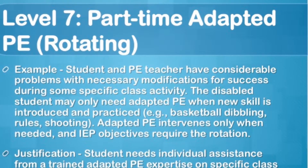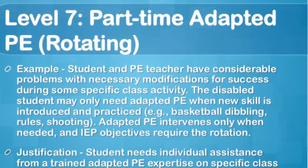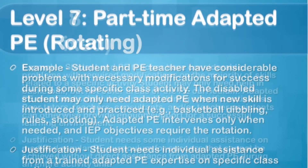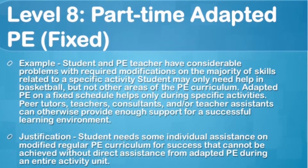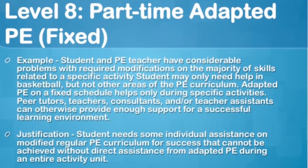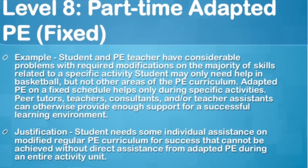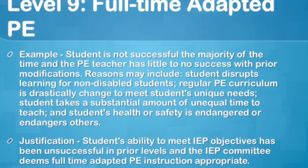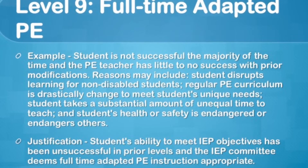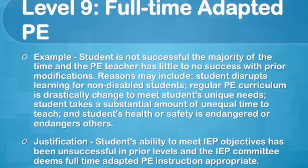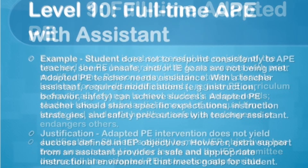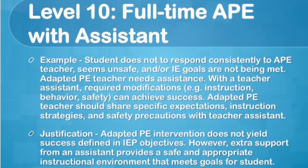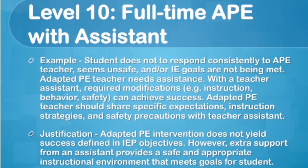Part-time adaptive PE involves a rotating PE or adapted physical educator in the process. Adapted PE intervenes only when needed and IEP objectives require the rotation. Level eight — student and PE teacher have considerable problems, so there needs to be a fixed adapted PE program with IEP learning goals. Level nine, there's a full-time adapted physical education teacher because students are not successfully participating in physical education who need it the most. Level ten is full-time adaptive PE with an assistant involved for students that don't respond consistently to the adaptive physical education teacher.